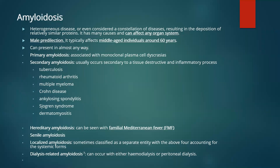There is also hereditary amyloidosis, which has a strong association with familial Mediterranean fever. We have senile amyloidosis, and also a localized form of amyloidosis affecting a single system, as well as dialysis-related amyloidosis.